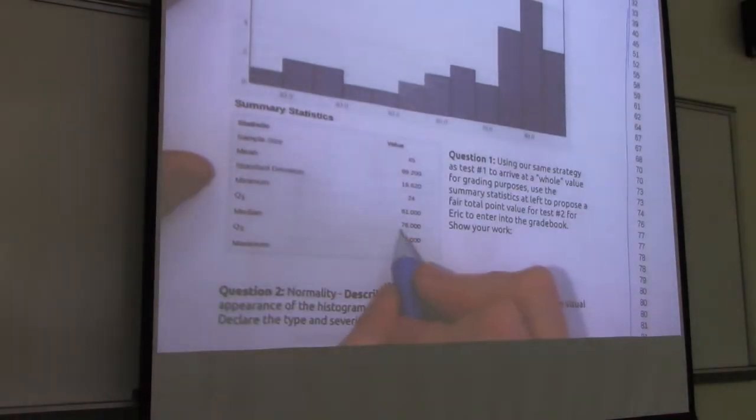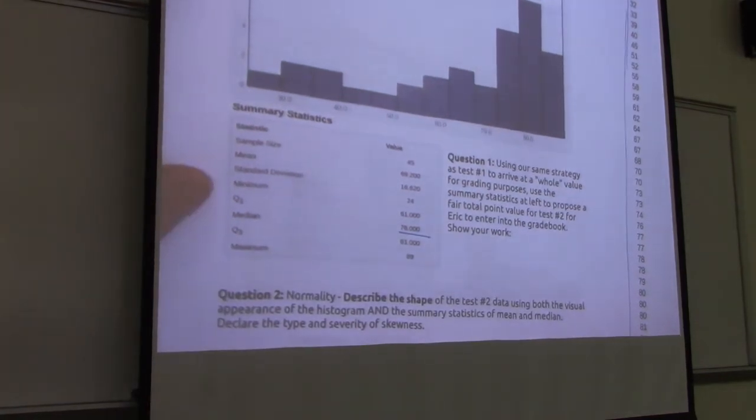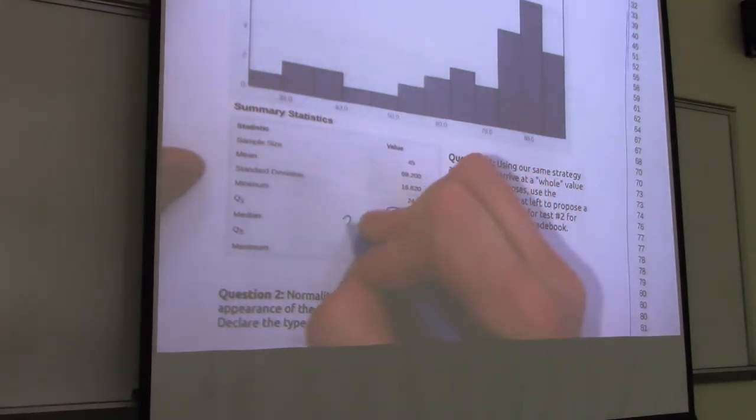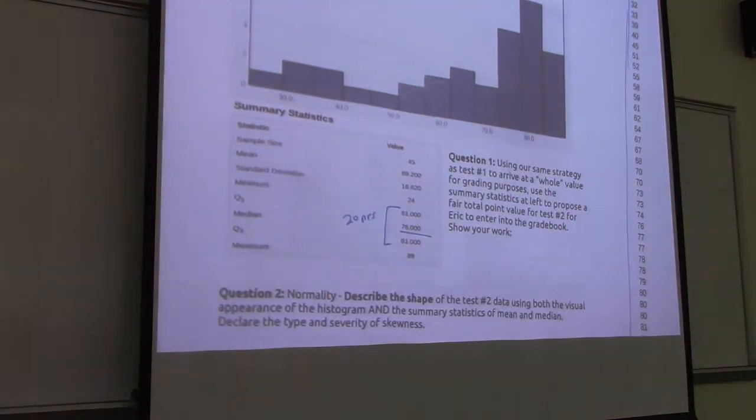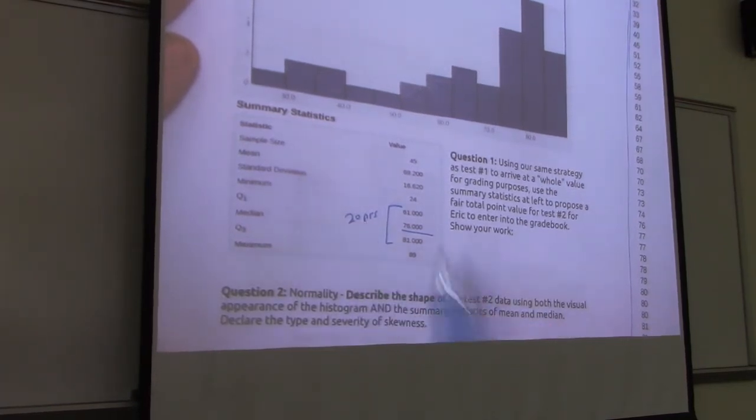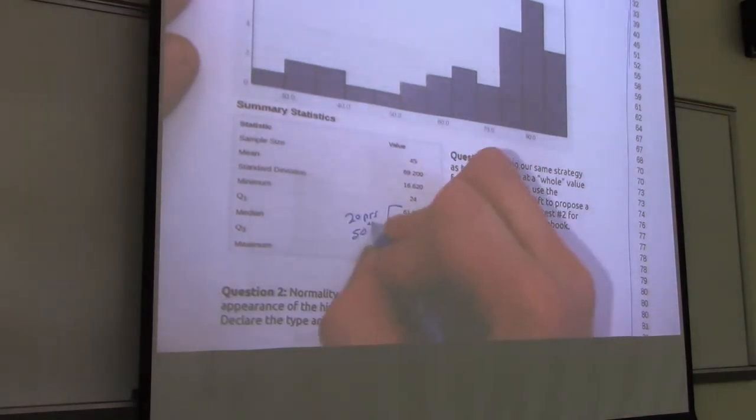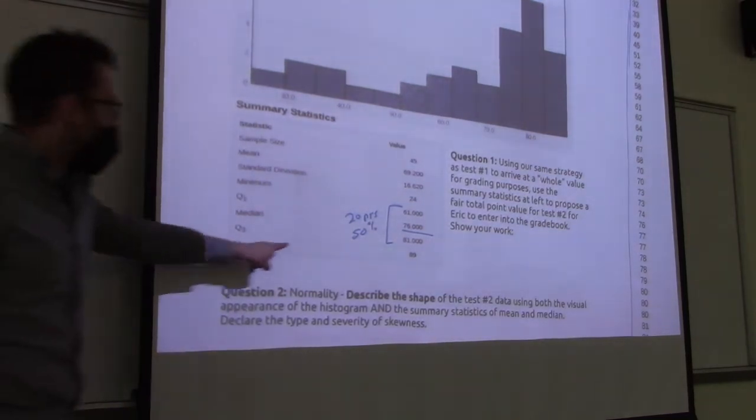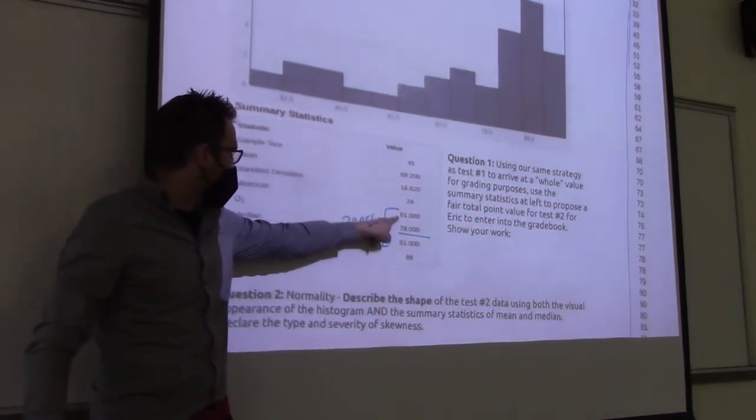So our median score came out to 76 with an interquartile range of from 61 to 81. So about 20 points. What does this mean, interquartile range of 20 points? And what does that mean in terms of what chunk of data does that bound? The middle 50 percent. Yeah, the middle half.